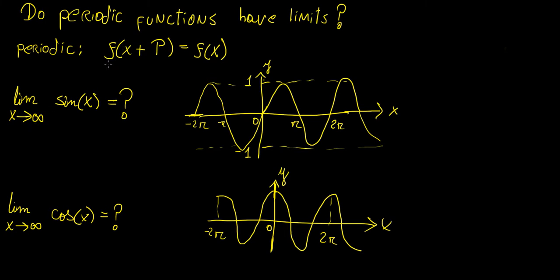Essentially a periodic function is defined as you have a value of a function x plus some period p, so that's a fixed constant value. It would be the same as essentially the value of f at x. That means you can choose any interval of period that will give you the same value of function at the previous period.